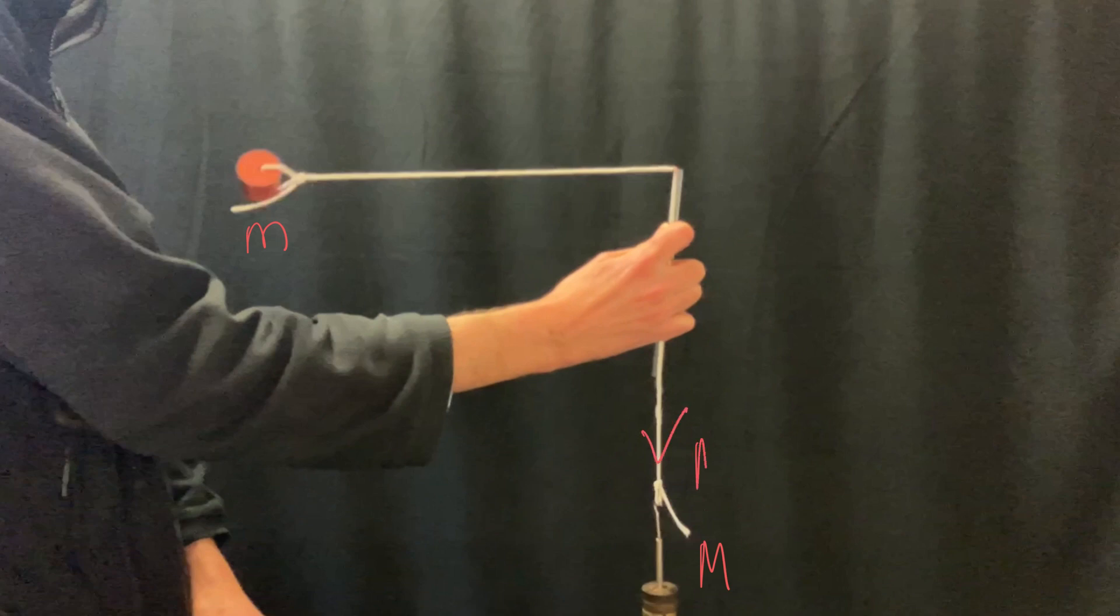If we ignore a small amount of friction acting at this point, then we can assume that the tension is the same throughout. Therefore the centripetal force on the bung is going to be provided by this big Mg.